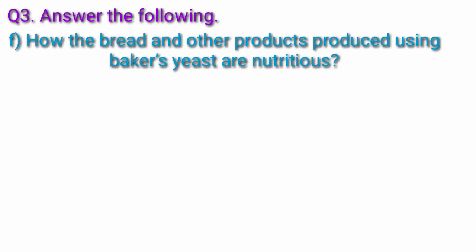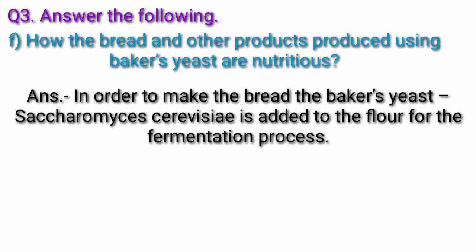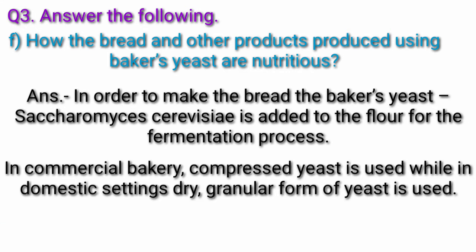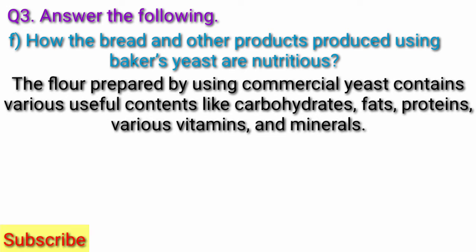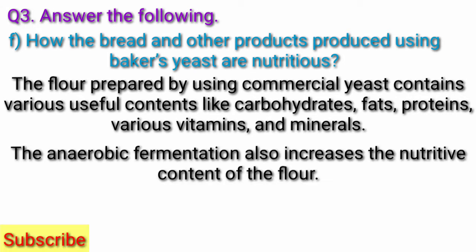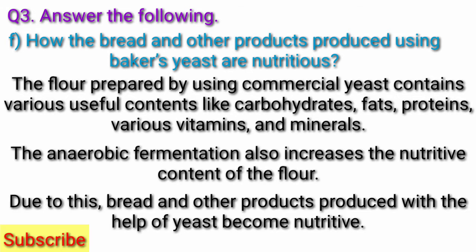Question F. How are bread and other products produced using baker's yeast nutritious? In order to make bread, baker's yeast Saccharomyces cerevisiae is added to the flour for the fermentation process. In commercial bakery, compressed yeast is used while in domestic settings dry, granular form of yeast is used. The flour prepared using commercial yeast contains various useful contents like carbohydrates, fats, proteins, various vitamins and minerals. The anaerobic fermentation also increases the nutritive content of the flour. Due to this, bread and other products produced with the help of yeast become nutritive.